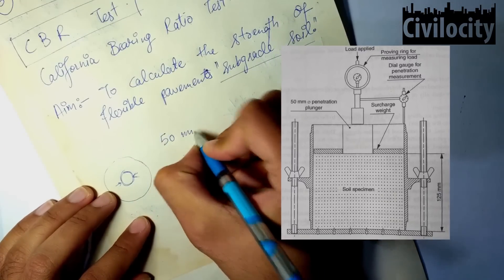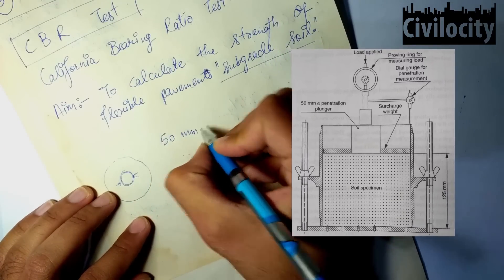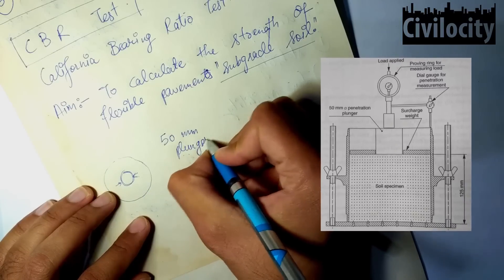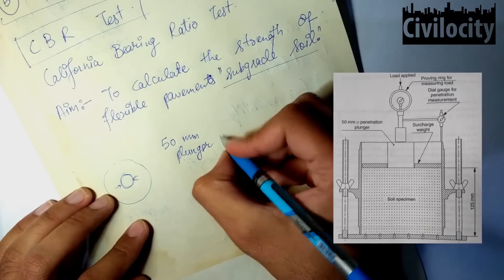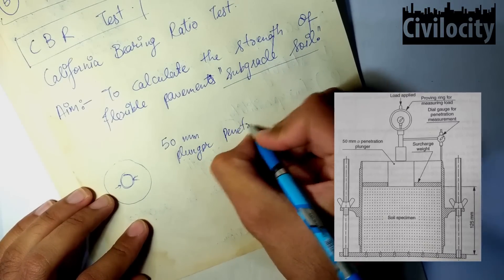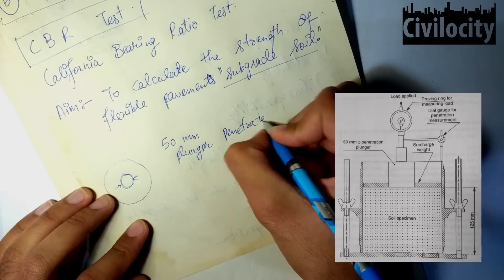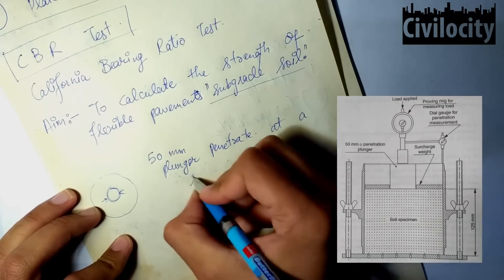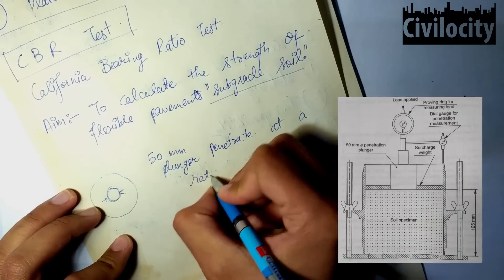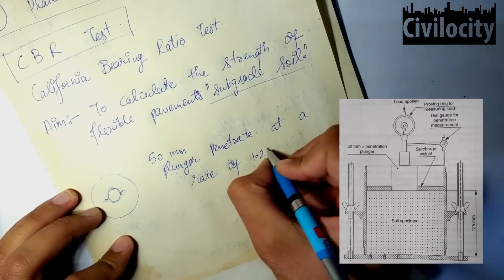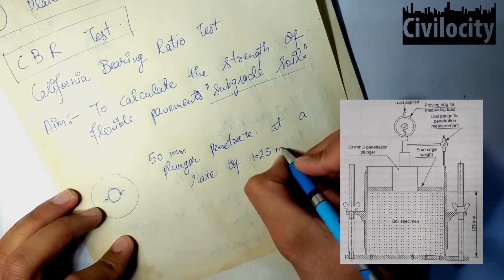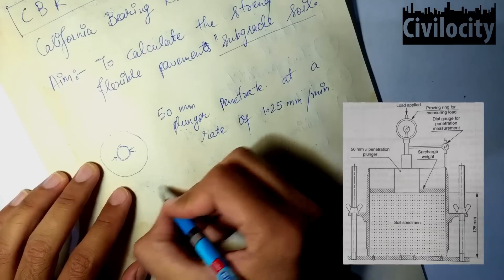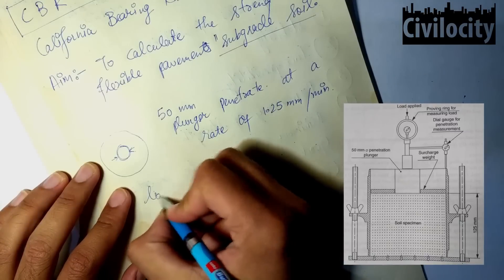Above the plunger there is a proving ring. Now about the procedure of this test: a 50 mm diameter plunger is penetrated into the soil specimen at a rate of 1.25 mm per minute. As we increase the load, the plunger continuously goes down.